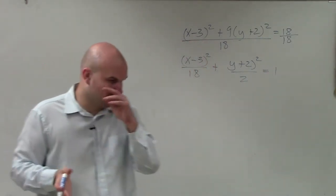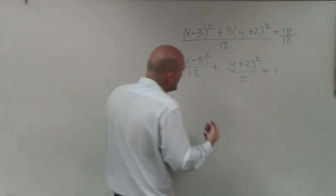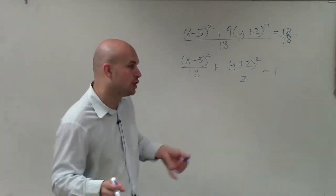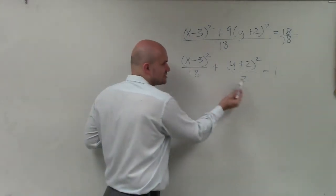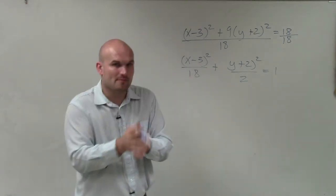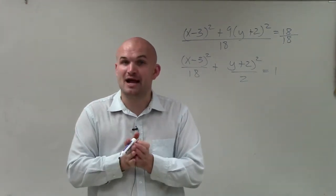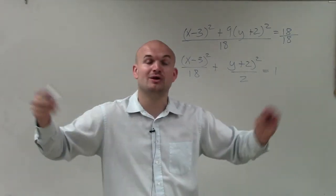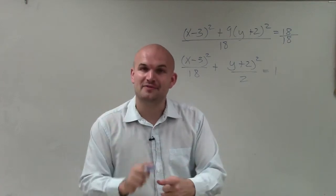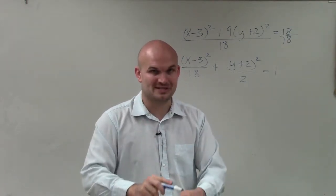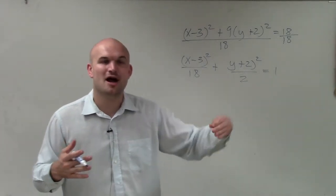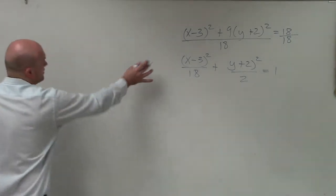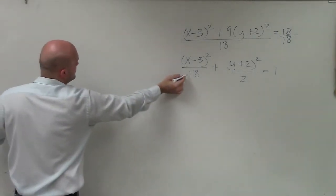Now I have this in a more familiar form. When dealing with standard form for an ellipse, the value a is always the larger number. You can see that 18 is larger than 2, so a is under my x. When a is under your x, the major axis is horizontal. That's very important because on the major axis is the center, the foci, and the vertices — all except for the co-vertices lie on that axis.